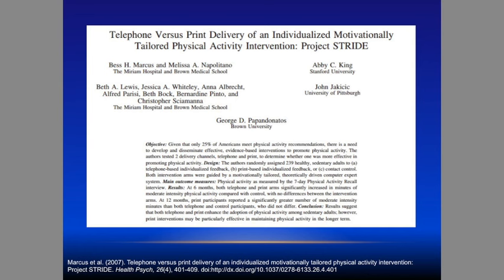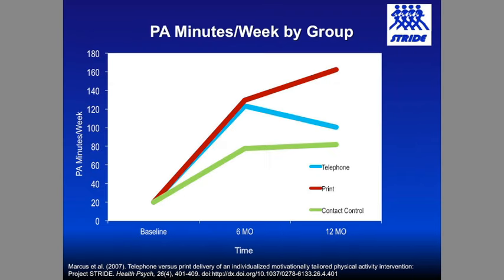Early work in Providence, Rhode Island compared telephone versus print-based interventions for physical activity. Both the print and telephone approaches significantly improved physical activity. During the maintenance period, print continued to get better, which we didn't expect, while telephone fell off. We think what happened is that when we had less contact — 11 contacts during the active phase, then only three during maintenance — the telephone group didn't have the materials and skills and weren't as independent, having relied on telephone coaches. The people who were more self-reliant using customized print were able to keep their activity going.